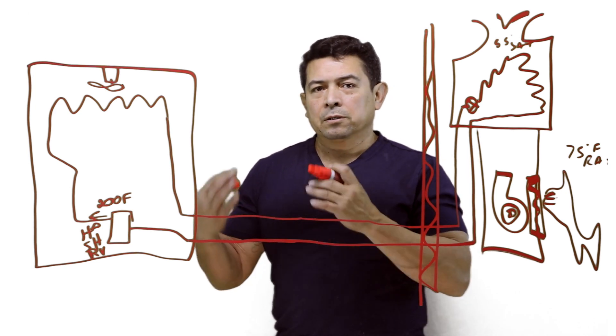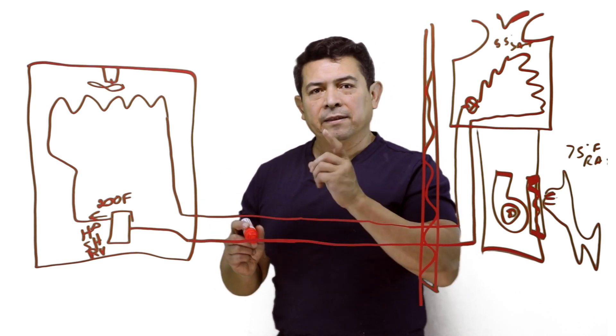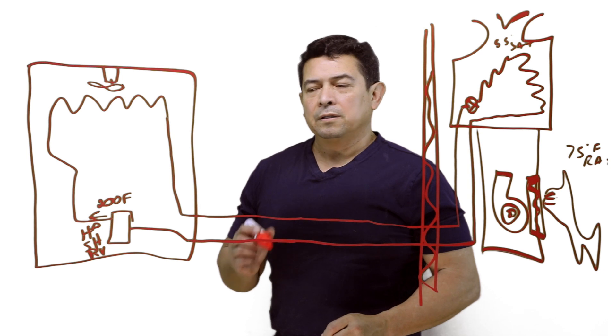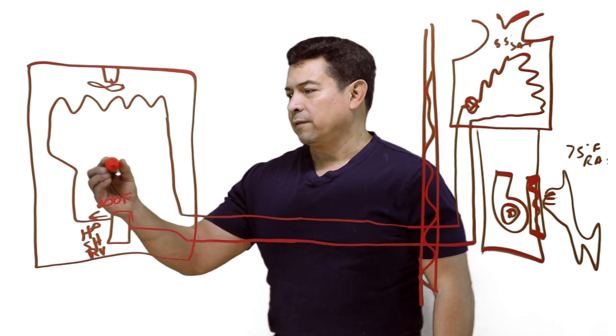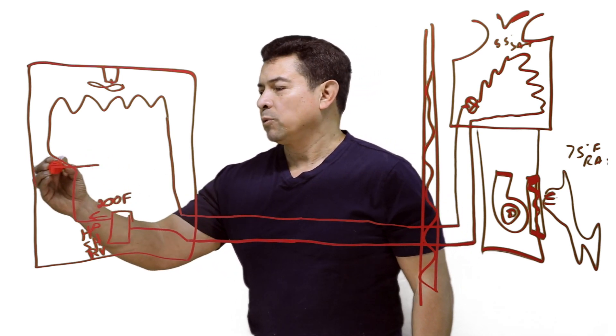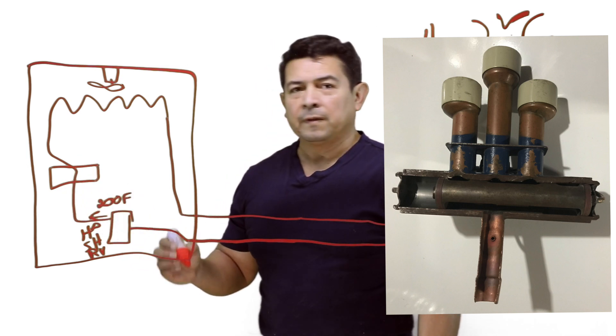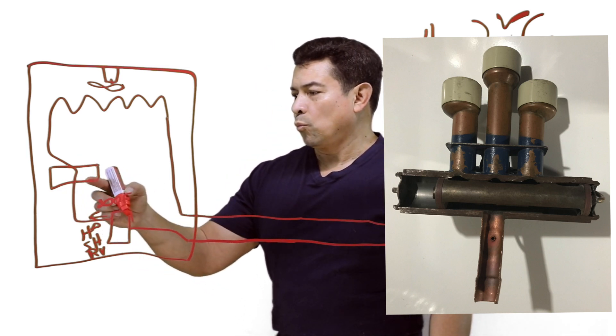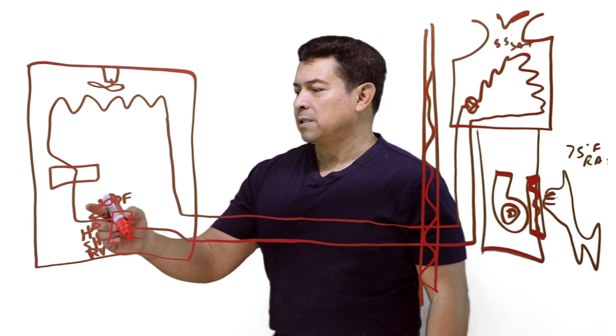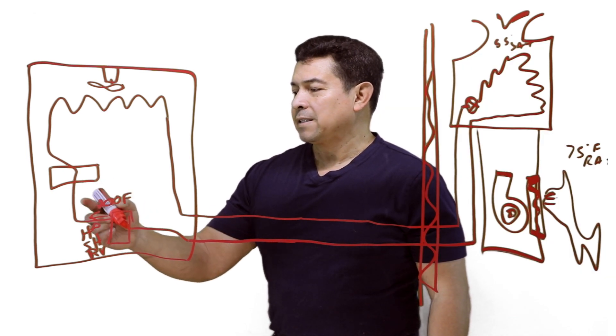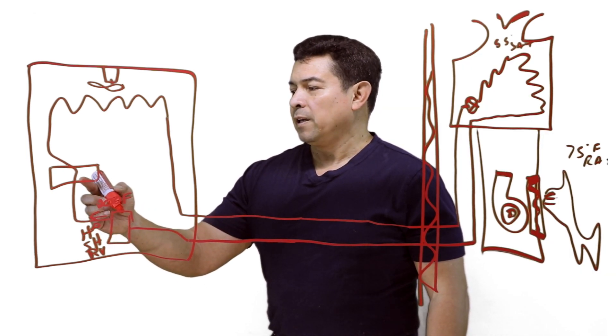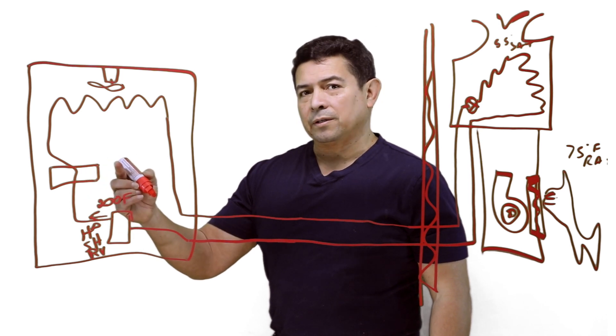But now, to turn this into a heat pump, the main thing that we need is going to be what they call a reversing valve. Your reversing valve basically would be right here. Now, this reversing valve is going to receive the gas that's coming out of here, and it's going to reroute it.